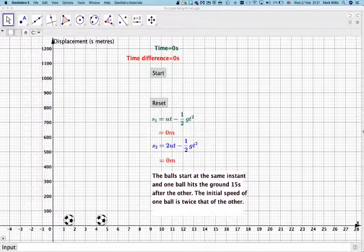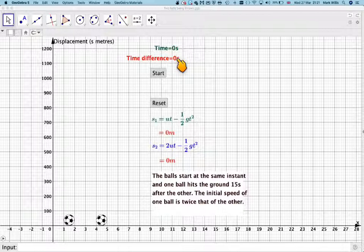If we start the animation, this is the time, and this will be the difference between the times after one has landed. This will give the displacement of the first ball, and this will give the displacement of the faster ball.